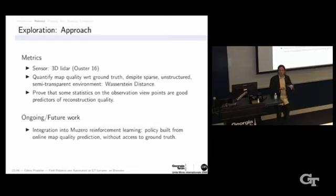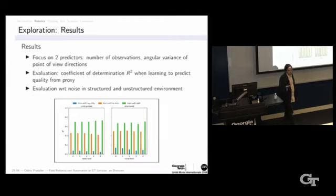First, how you measure that reconstruction is good. And second, can you get something that you can measure in real time without ground truth that tells you, okay, now my reconstruction should be good. I have enough measurements. In the end, the goal is to link that with a MuZero type of exploration policy. But this is ongoing. In the end, the results are somewhat intuitive. But we can prove that if you get a good spherical variance of the viewpoint and enough points, then you can get a threshold above which you can guarantee that reconstruction can be good. And we can have a way to estimate this threshold.